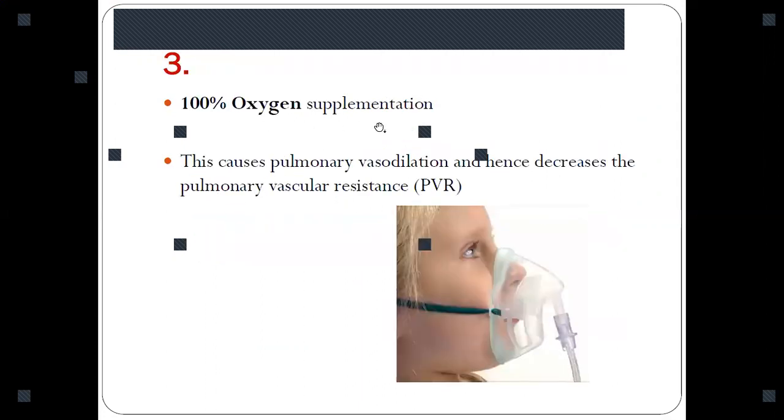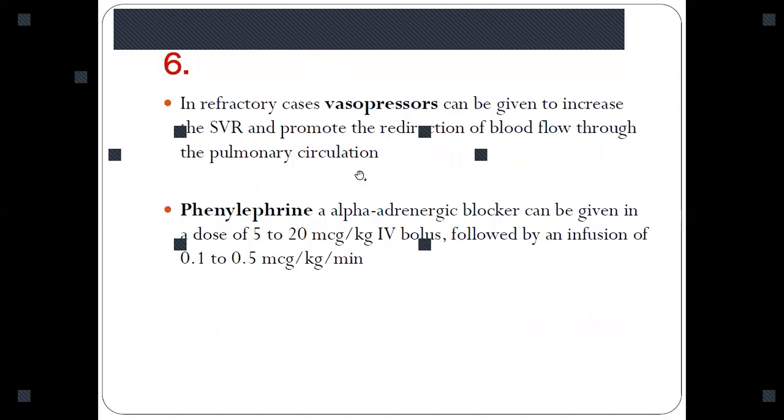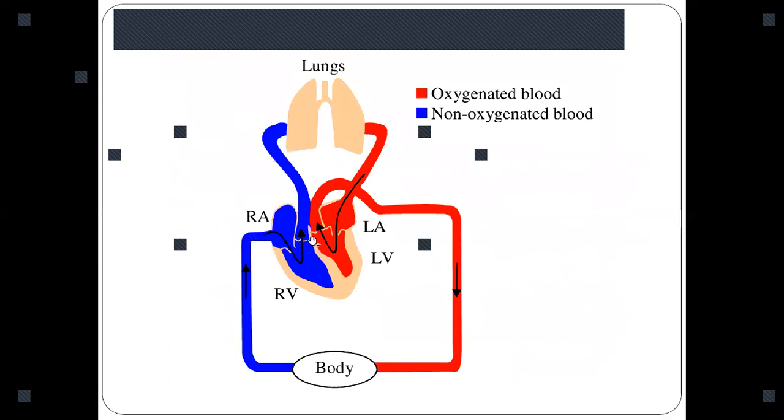Third is 100% oxygen supplementation. 100% oxygen supplementation in the lungs causes pulmonary vasodilation. Whenever there is pulmonary vasodilation, the blood can easily go because there is now less resistance.